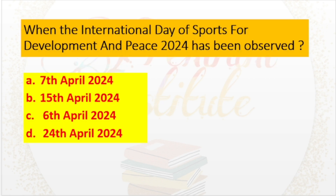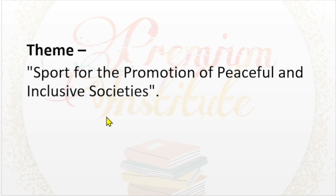When has the International Day of Sports for Development and Peace 2024 been observed? a. 7th April 2024, b. 15th April 2024, c. 6th April 2024, d. 24th April 2024. Answer: 6th April 2024. Theme: Sport for the promotion of peaceful and inclusive societies.